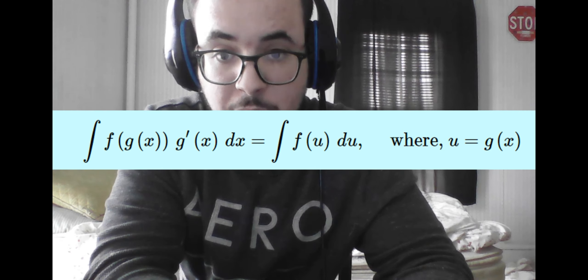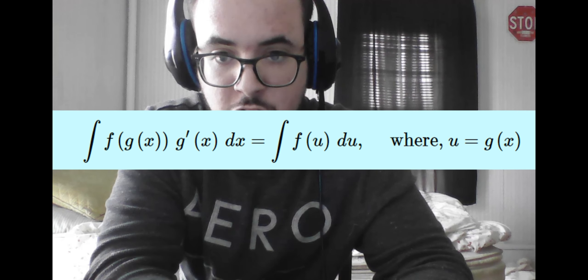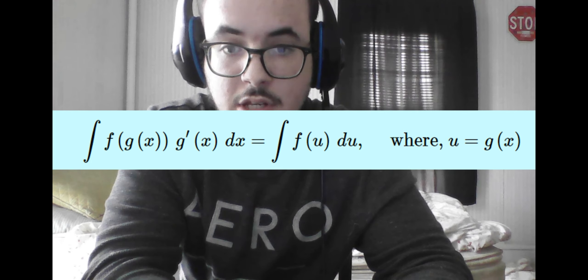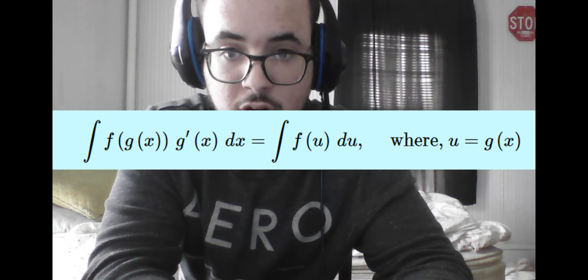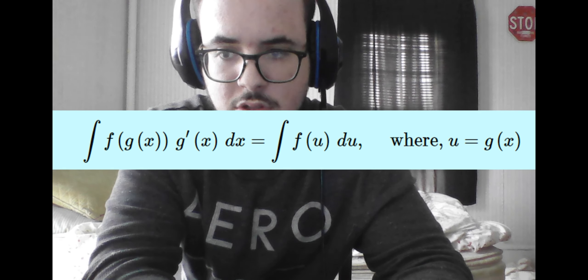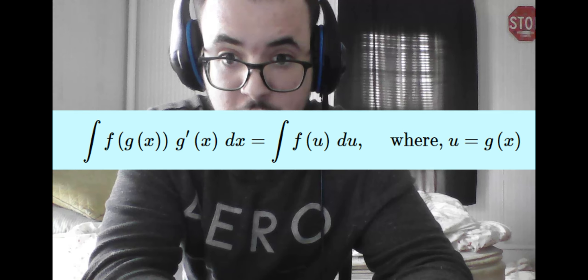We see because of how the chain rule works for derivatives, the integrals must follow a very specific format in order to actually be integrable. Namely, you have to have the derivative of function 1 of function 2 times the derivative of function 2. And if it does not follow this very specific format, you will not be able to integrate the function.